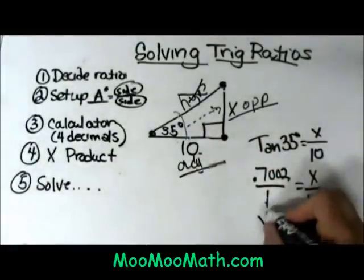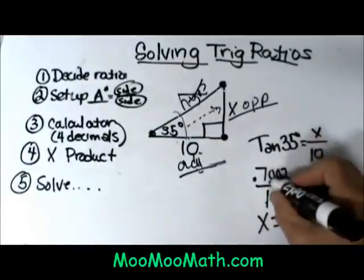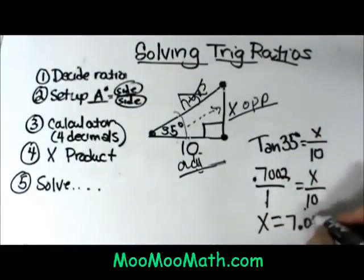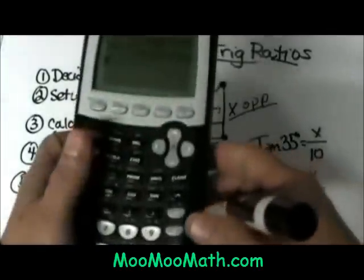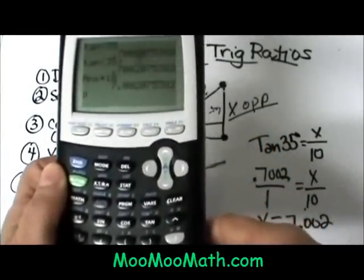So I get 1 times x which is just x and 10 times 0.7002 is just going to move the decimal one place but if you're unsure grab your calculator and just multiply by 10 and there you go.